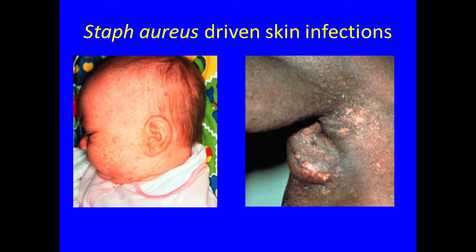Individuals often have recurrent boils as well, starting early in life. These are pockets of pus filled with Staphylococcus aureus and neutrophils. In this disease, symptoms might not be that striking — you can have a boil and not feel very sick from it. We refer to these as cold boils: they might not be red, tender, or hot. But they are typically caused by Staph aureus.